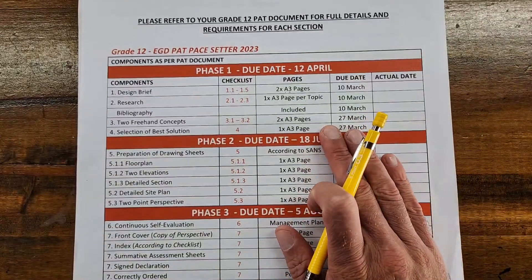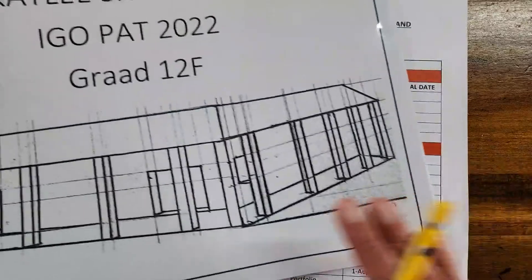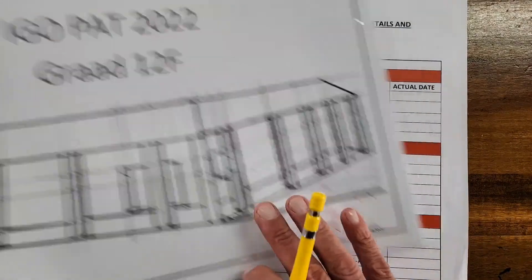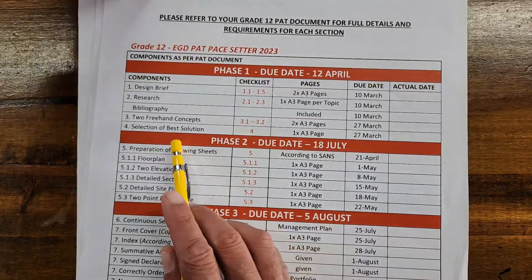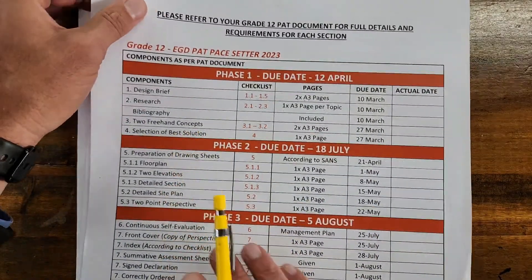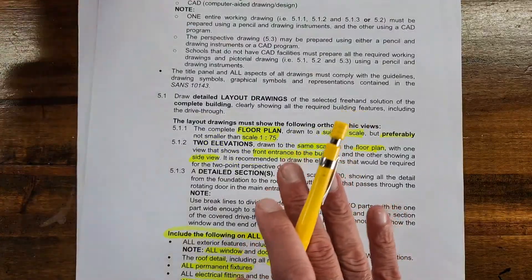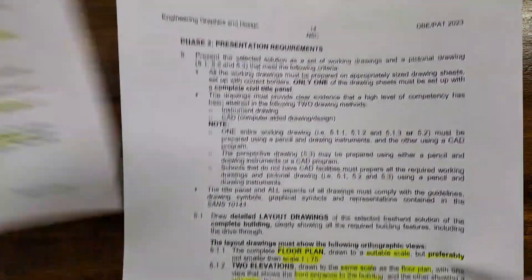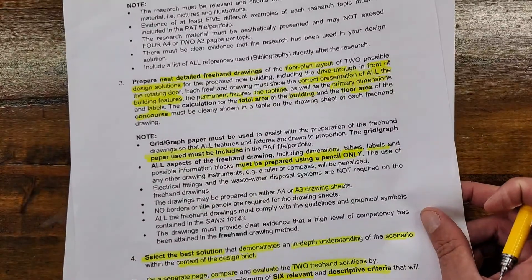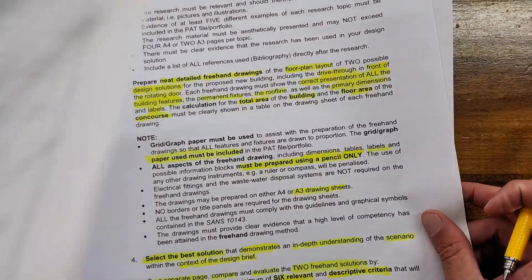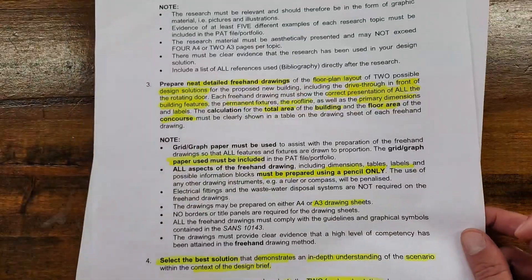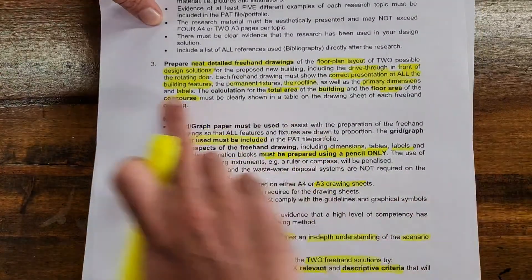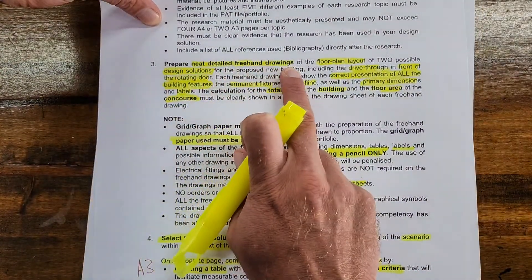I'm going to show you a couple of PATs from previous learners that really did well and talk you through how they did it. For selecting the best solution, we refer to two pages: the actual PAT document — we're on page 13 and 14 — and then the second one is your checklist. On page 13 we finished number three, which was our new detailed freehand drawings.